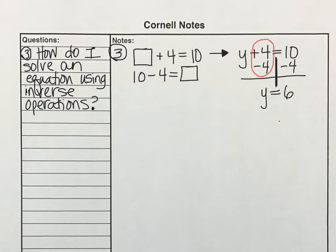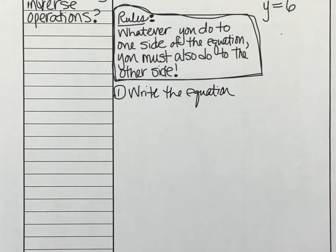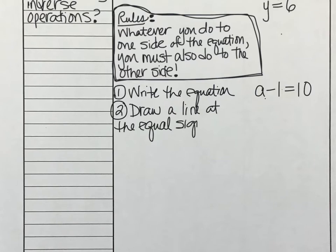So let's look at some rules for solving equations. The biggest rule is this. Whatever you do to one side of the equation, you must also do to the other side. There are basically four steps in solving any one step equation. Let's look at these one piece at a time. The first step is always write the equation. So you may have to copy this down on separate paper. Here's another example. A minus 1 equals 10. The next thing that you need to do is draw a line at the equal sign. I'll show you what I mean. So we're really going to make more of a T chart here. We're going to draw a line down, and we're going to draw a line across. We kind of make it look like a balance beam.